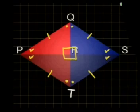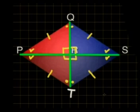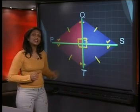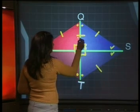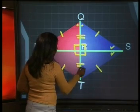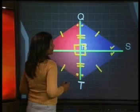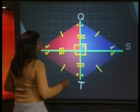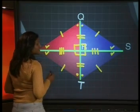Now have a look at the diagonals of the rhombus. The diagonals are QRT and PRS, and they intersect at point R. Let's look at the line segments that form diagonal QRT. We know that QR is equal in length to RT, so we can say that diagonal QRT has been bisected or cut in half. The same is true for diagonal PRS — PR is equal in length to RS, so diagonal PRS has also been bisected or cut in half.